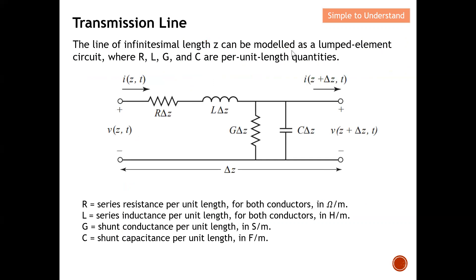A line of length Δz can be modeled as lumped elements with R, L, G, and C as per-unit-length quantities. This is the equivalent schematic to represent a very short section of the transmission line. At this short distance Δz, the transmission line can be represented by this equivalent circuit. You can see that the current differs and there will be a voltage drop across R, L, G, and C.